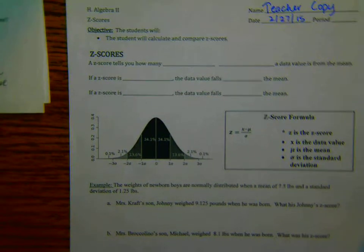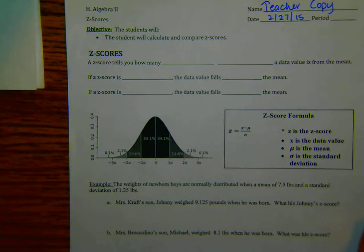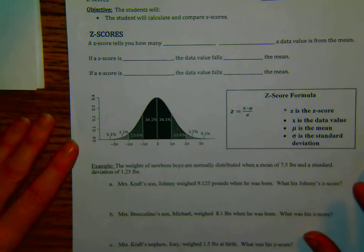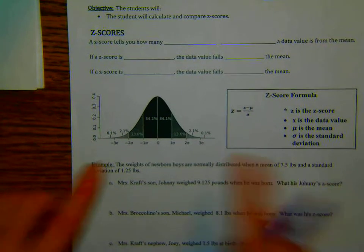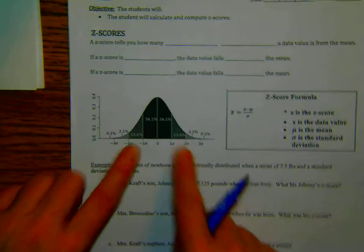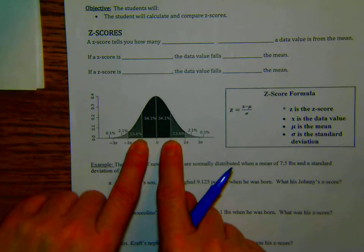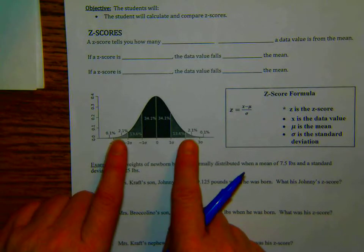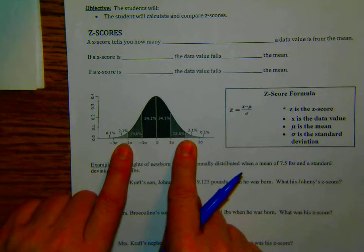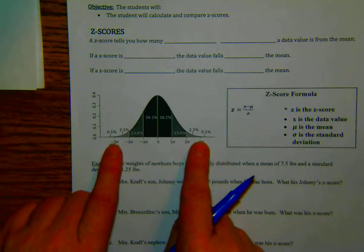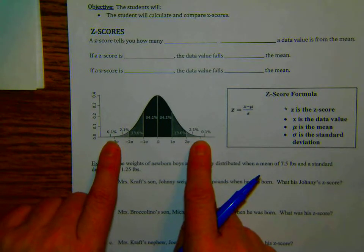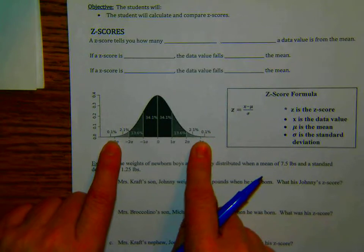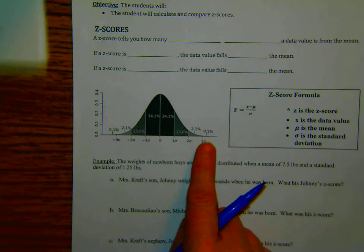Okay, last class we talked about standard deviations. We talked about a normally distributed curve where we had one standard deviation where 68 percent of the data was, then two standard deviations where 95 percent of the data was, and three standard deviations where 99.7 percent of the data was. So we're moving on today.